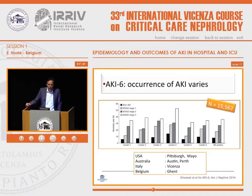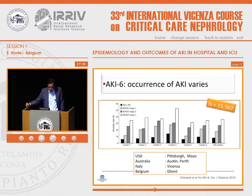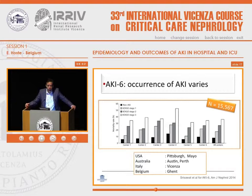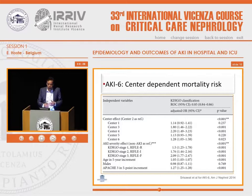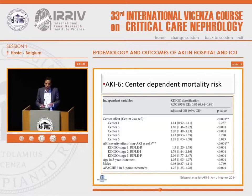In the AKI6 study, performed in six centers around the world — two in the USA, two in Australia, and two in Europe, one in Vicenza — there was marked variation in incidence of acute kidney injury among centers. This variation persisted even when corrected for differences in baseline characteristics. Even more remarkably, there was a difference in outcome: some centers did better than others, and even when corrected for other variables, there was still a signal. So there's a difference in how we treat our patients and how this relates to outcome — puzzling data.